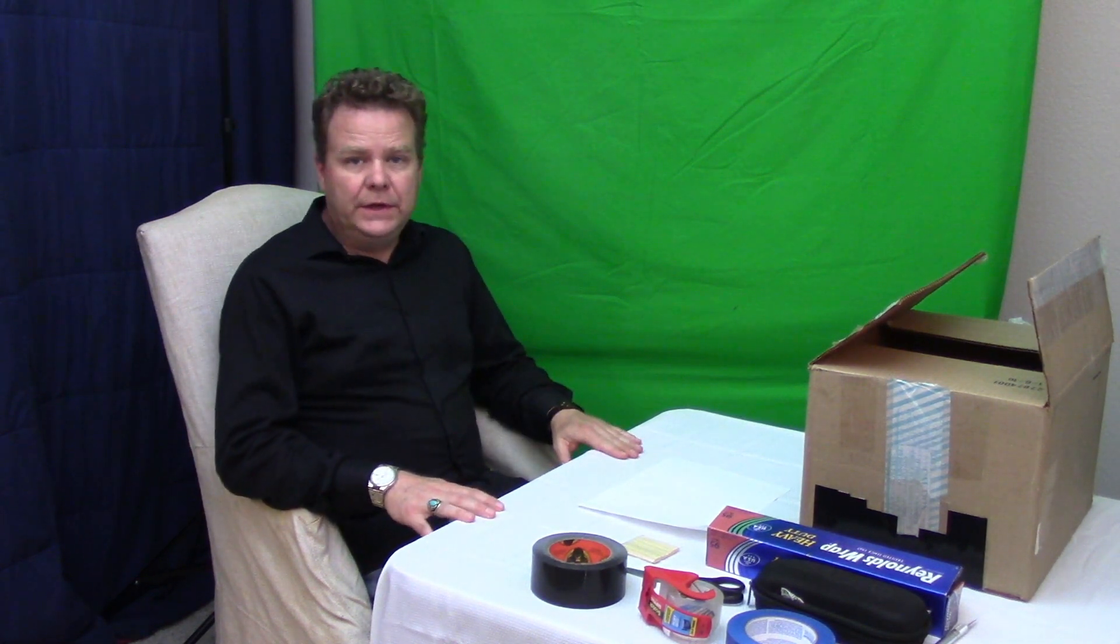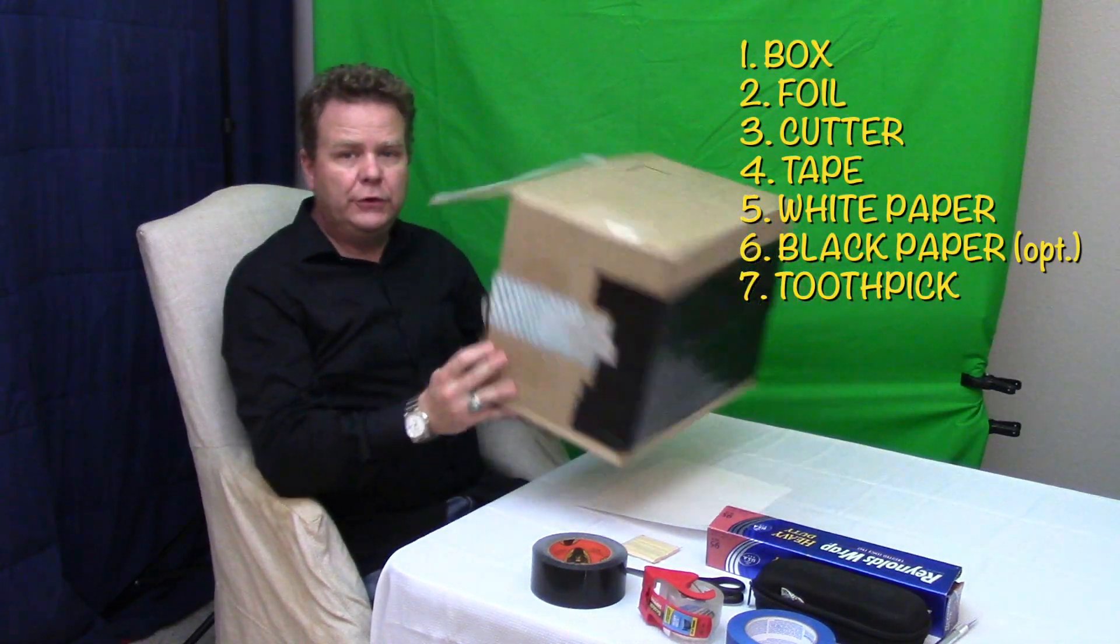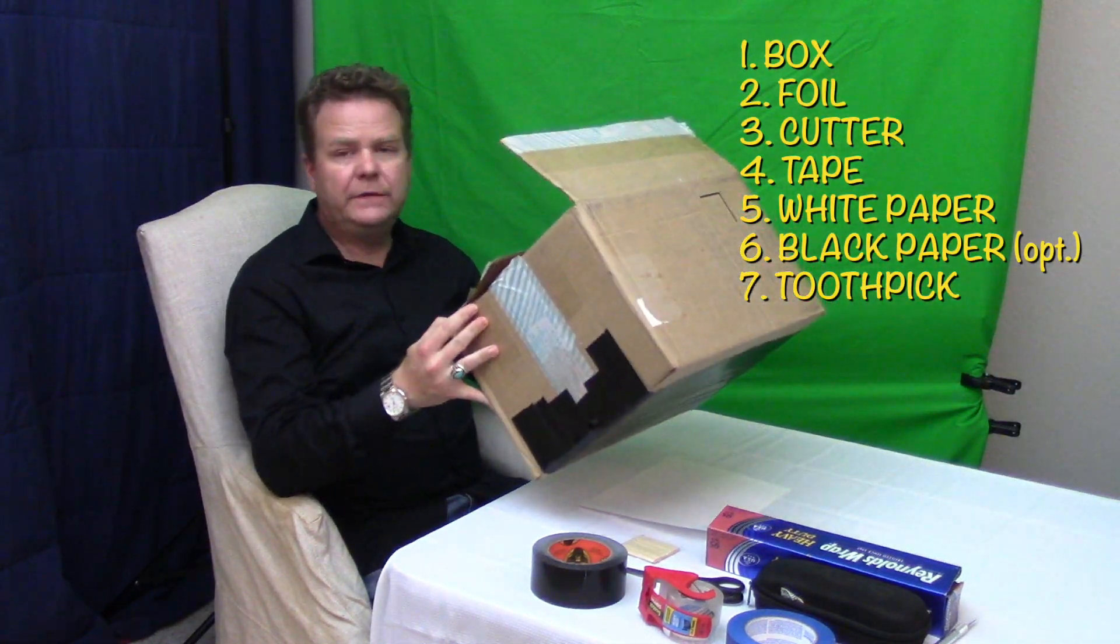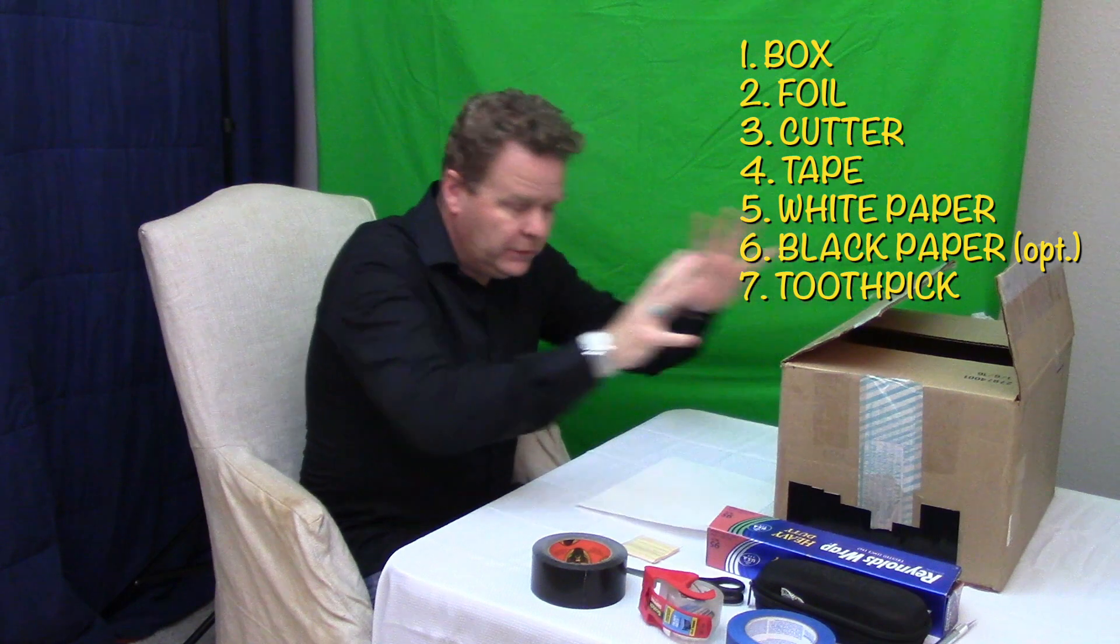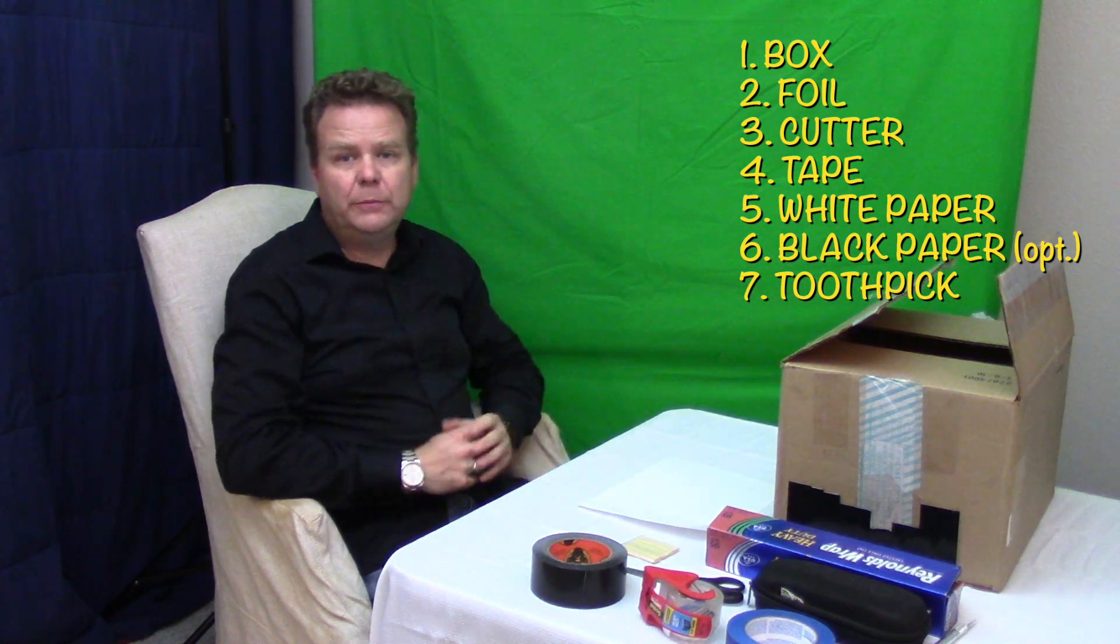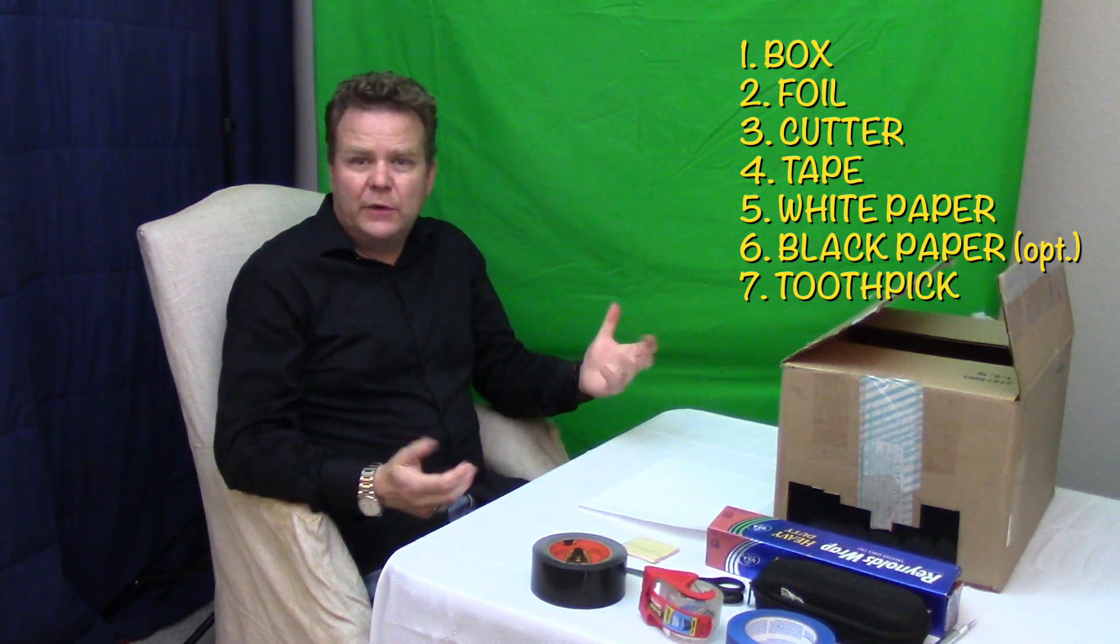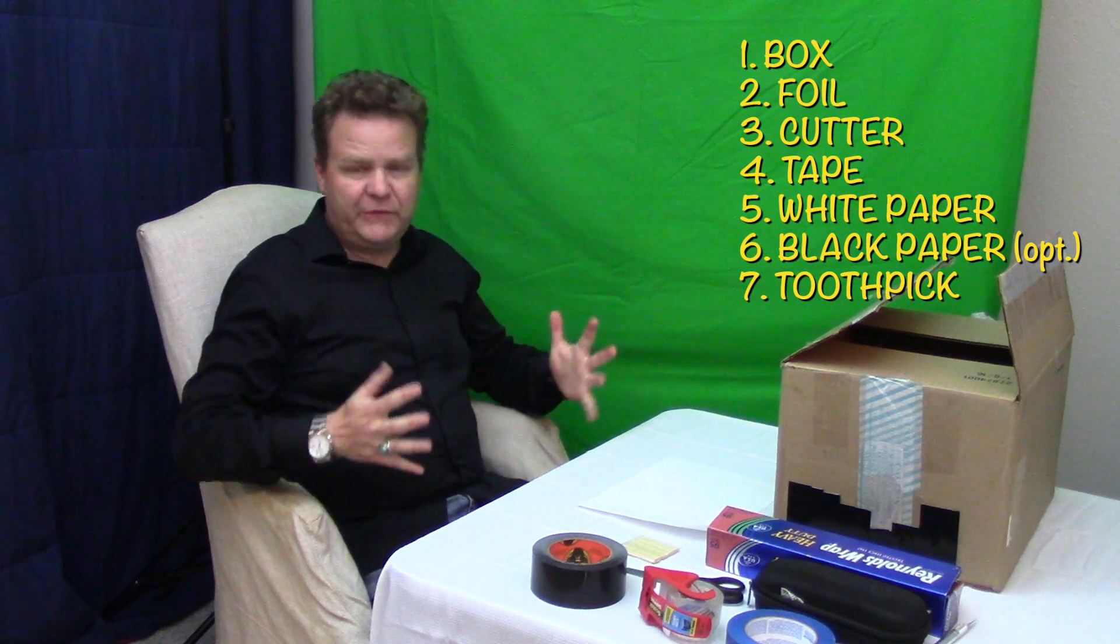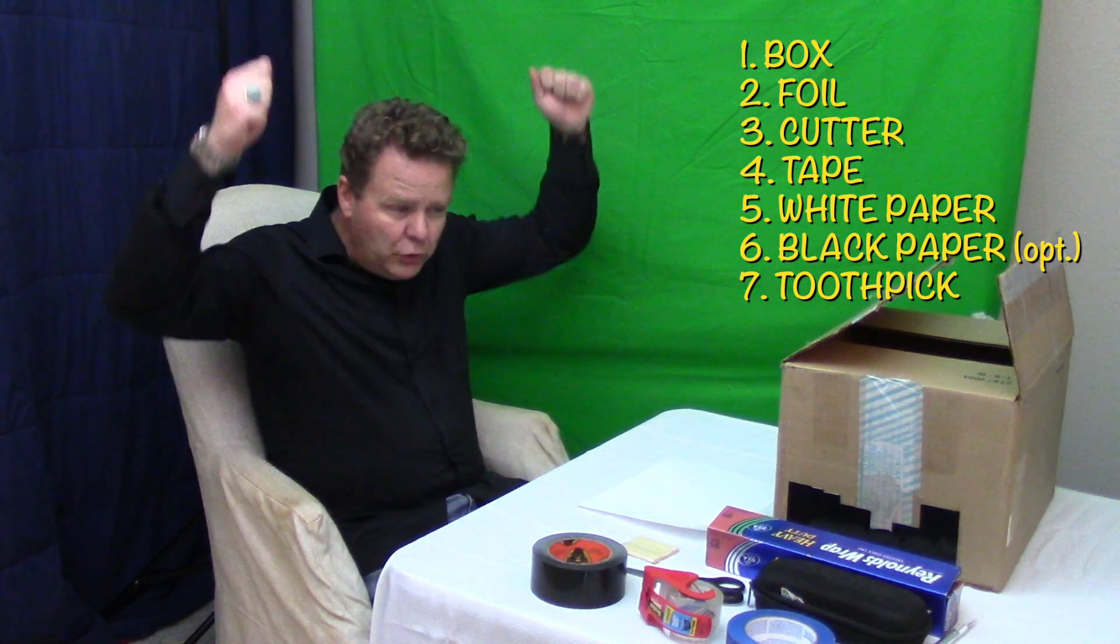Okay, now that we've learned how a camera obscura works, let's go ahead and make one. Some of the things that you're going to need: you'll need a box. You don't need one this big, but the larger the box, the larger the image will be.